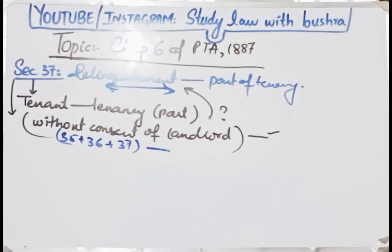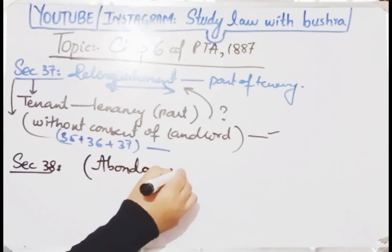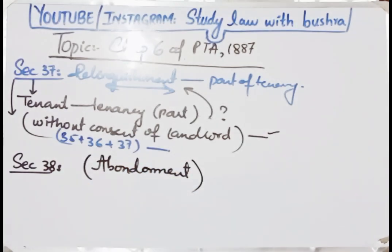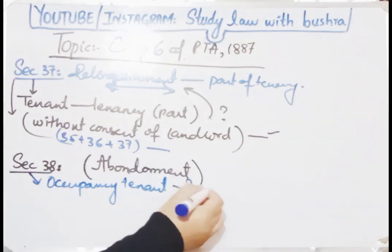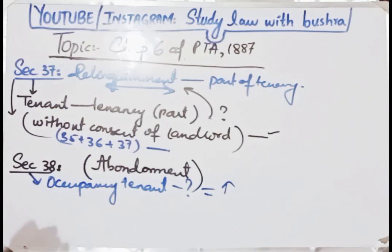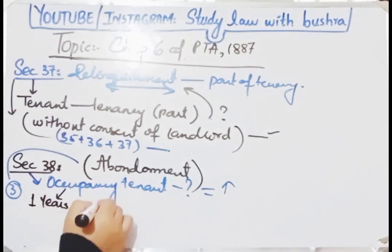Section 35, 36, aur 37 ne baat ki relinquishment ki. Uske baad aate hain section 38 ke upar jo ke discuss kar raha hai abandonment ko. Abandonment ka matlab bhi hai chhodna. Section 38 kehta hai ke occupancy tenant tenancy ko kis tarah se abandon karega. Section 38 ne do cheezon ko discuss karte huye kaha hai ke abandonment of occupancy tenant kis tarah se hogi: if a tenant having the right of occupancy fails for more than one year without sufficient cause to cultivate his tenancy either by himself or by some other person.